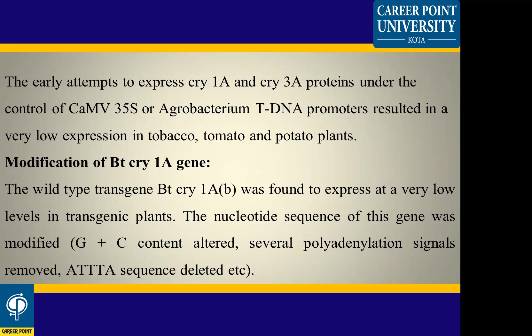The wild-type transgene beta cry1A was found to be expressed at a very low level in transgenic plants. Therefore, the nucleotide sequence of this gene was modified — its GC content was changed.